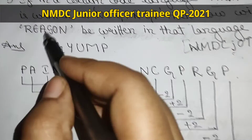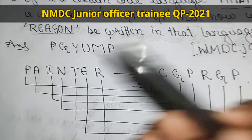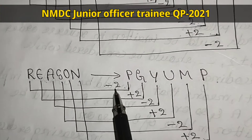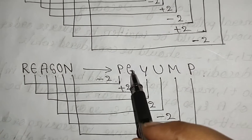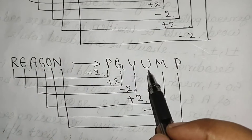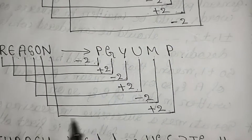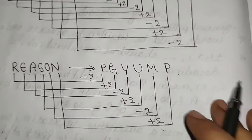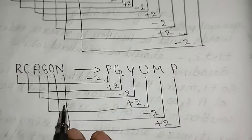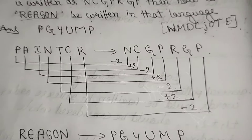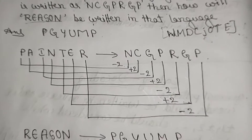For REASON, apply the same pattern of minus 2 and plus 2 alternately. R minus 2 gives P, E plus 2 gives G, A minus 2 gives Y, S plus 2 gives U, O minus 2 gives M, N plus 2 gives P. So REASON is coded as PGFUMP — the answer is PGFUMP.